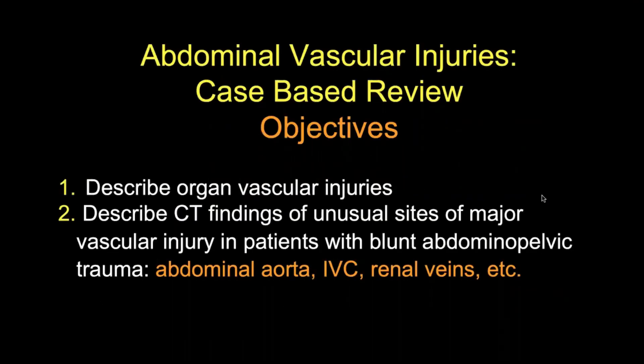Over the next 15 minutes, we will describe the organ vascular injuries and the CT findings of unusual but important cases of major vascular injury in patients with blunt abdominopelvic trauma, including those of the abdominal aorta, IVC, renal veins, and other vascular structures. We will also present a few penetrating vascular injuries for the purpose of comparison.